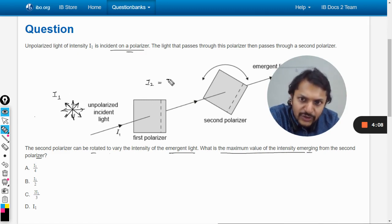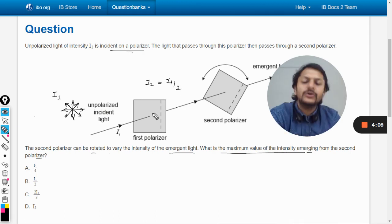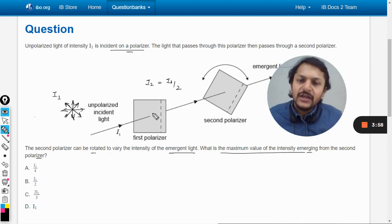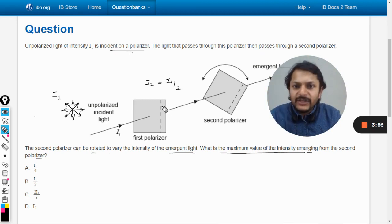So I₂ will be I₁ by 2 as a matter of principle. This doesn't change—the intensity after the first polarizer is always going to be 50%, no ifs, no buts. Whatever the axis of polarization—vertical, horizontal, 45 degrees, 30 degrees—they're just going to confuse you.